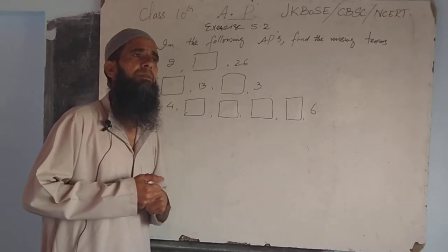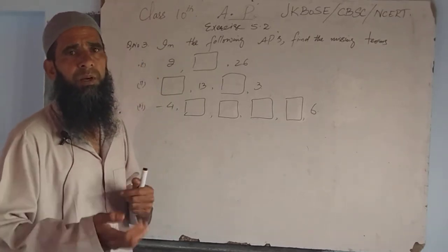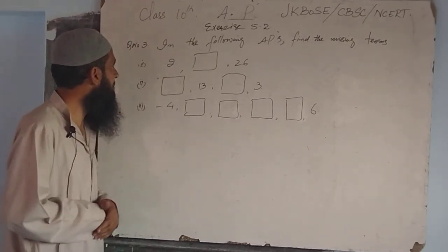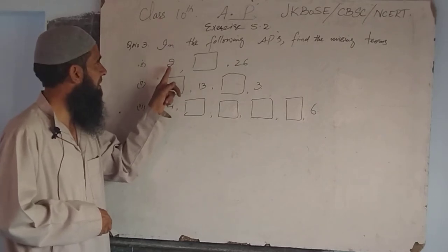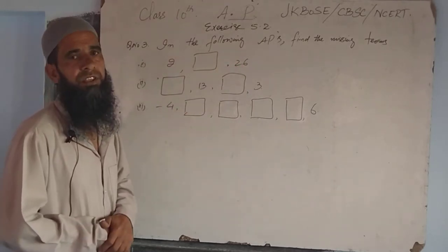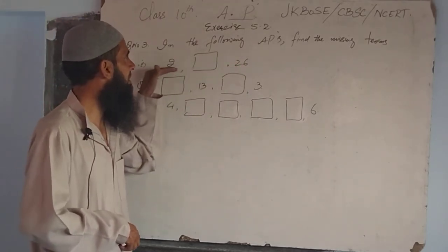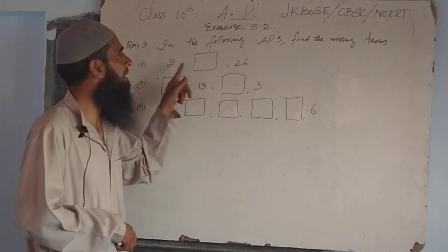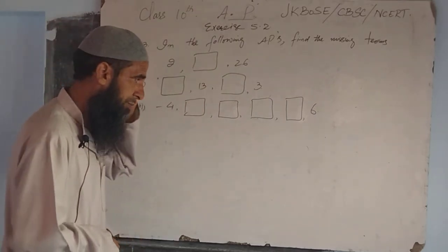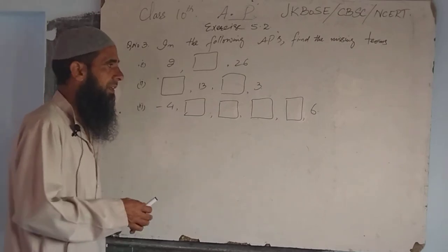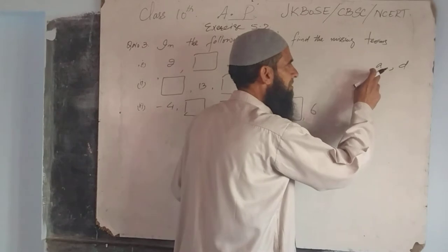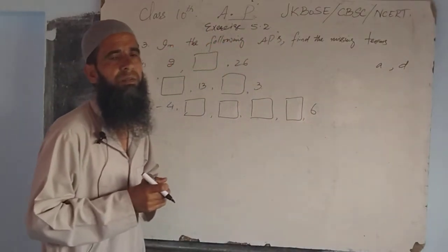We will discuss the first part of this question. We have a given arithmetic progression where the first term is 2 and the next available term is twenty-six. We have three terms in this AP: the first term is given, the second is missing, and the third is given. We know A and D — the first term and common difference.